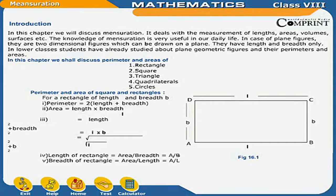Perimeter and area of square and rectangles. For a rectangle of length L and breadth B: Perimeter is equal to 2 into (length plus breadth). Area is equal to length into breadth, which is equal to L into B.